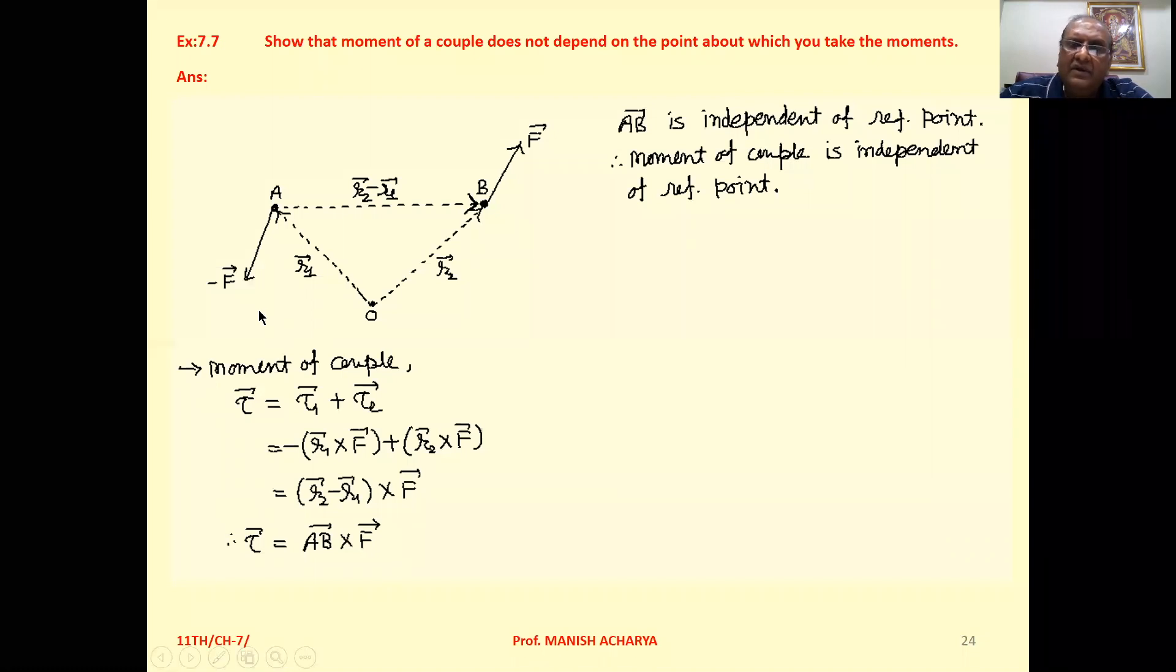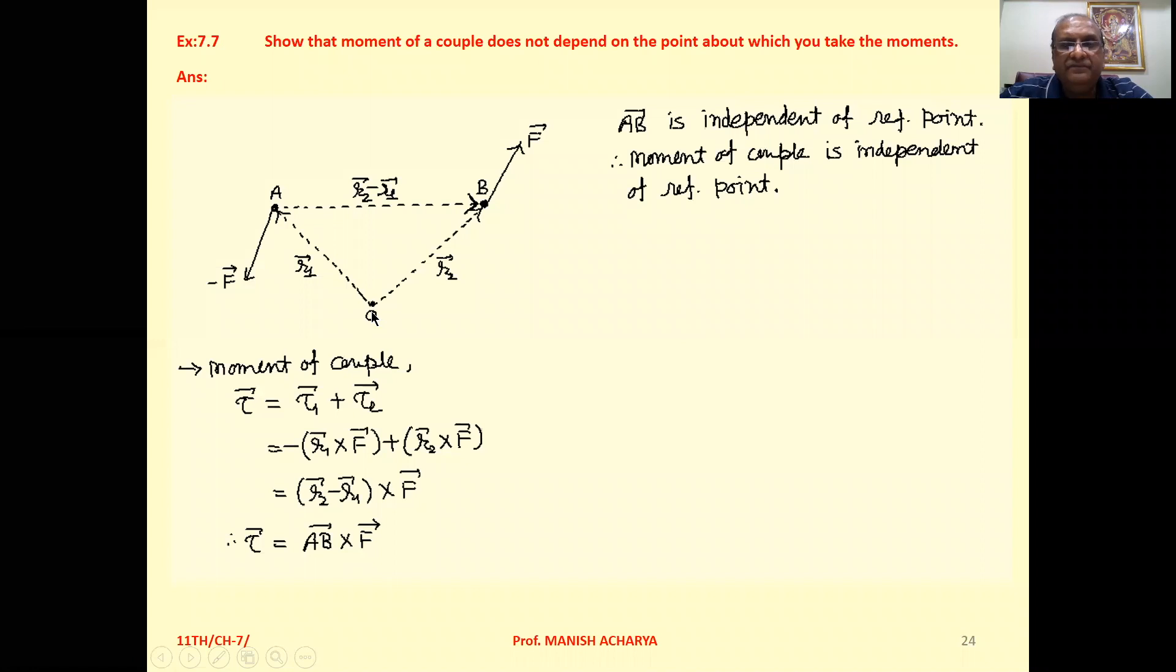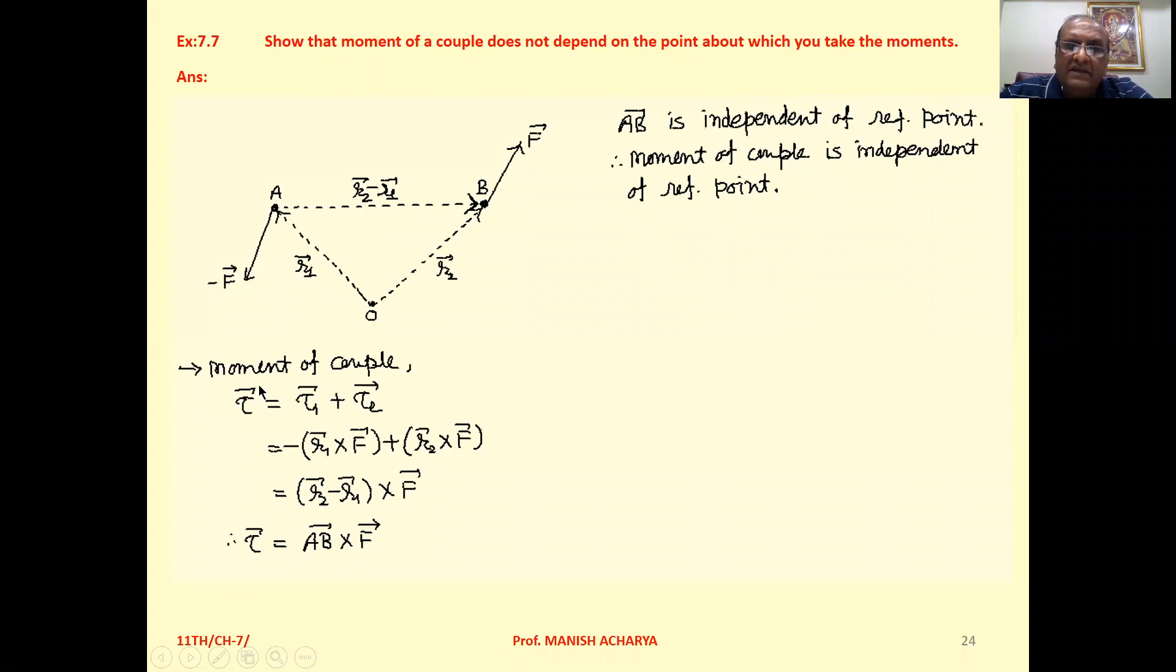Now here two forces are there, so it will give you two torques. So resultant torque or we can say that is the moment of couple equal to torque tau 1, which is produced due to force at A, torque tau 2, which is produced due to force at B. So tau 1 plus tau 2.